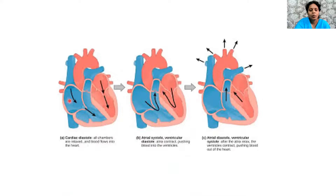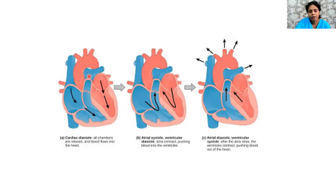Coming to the circulation: the right atrium receives deoxygenated blood and passes it to the right ventricle through the tricuspid valve. Simultaneously, the left atrium receives oxygenated blood and passes it through to the left ventricle. Once the ventricles are filled with blood, the valves are closed with a sound. Then from the right ventricle, blood passes towards the pulmonary artery, and from the left ventricle, blood passes towards the aorta, from which it is transported to all other body parts. This is a brief overview of the circulatory system.